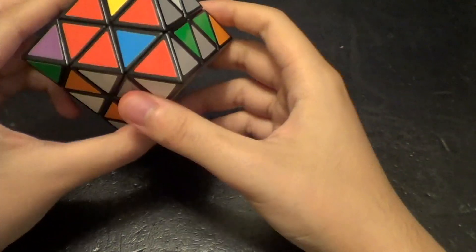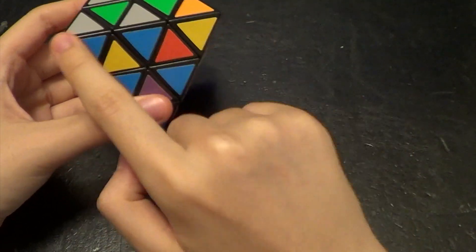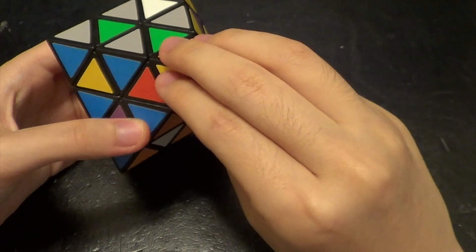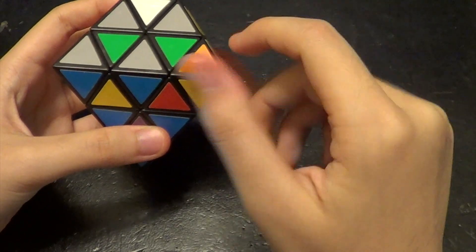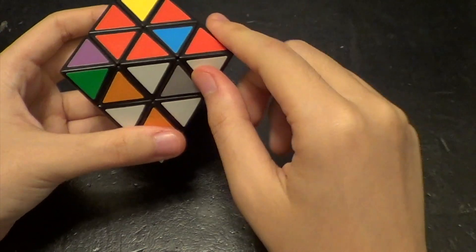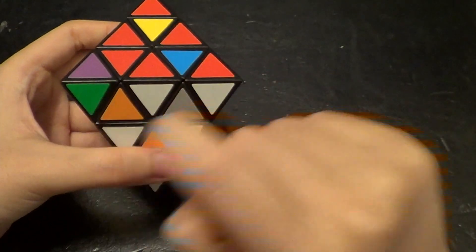So essentially what will happen is we can choose these two adjacent corners, flip this so that it's in the correct orientation, and then mess this up on purpose, and then we can do these two adjacent and then fix them together.